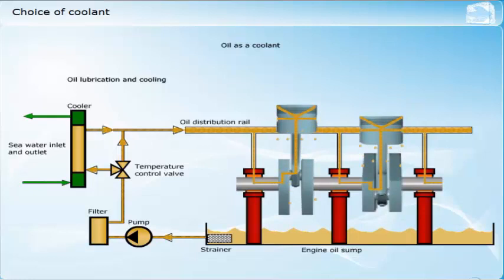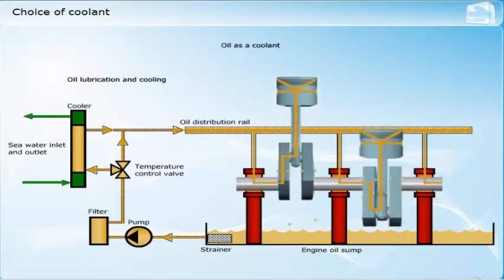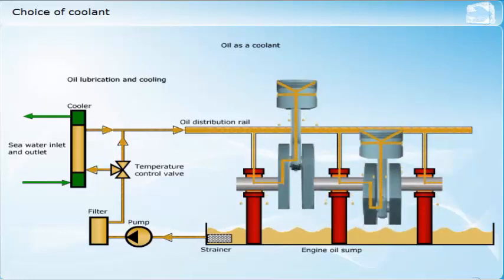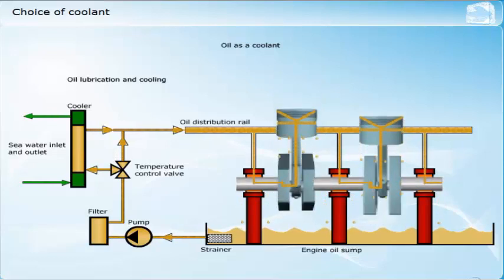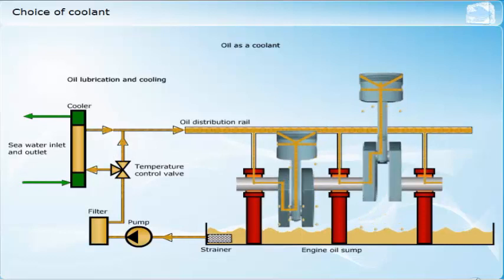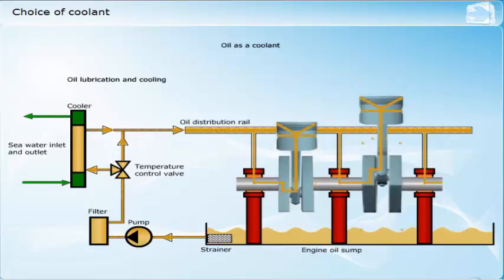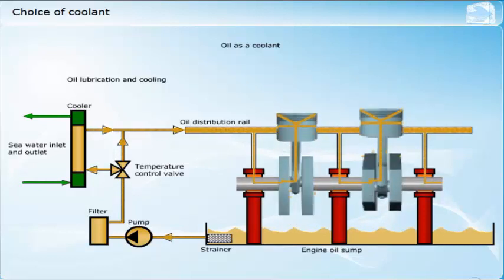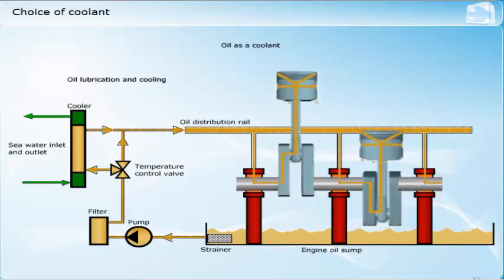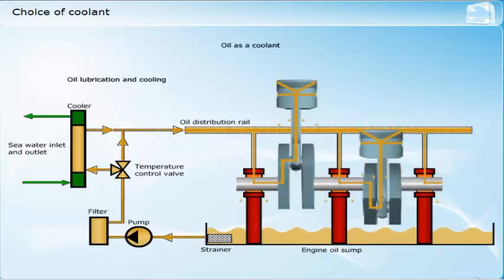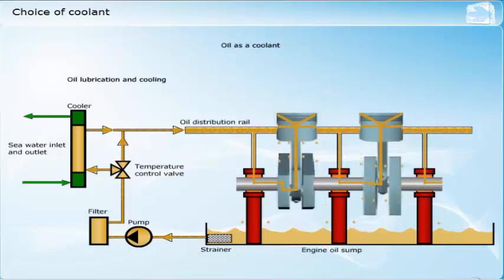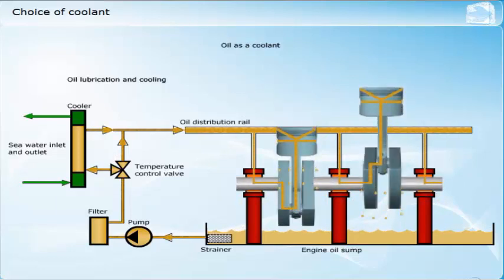The moderate specific heat capacity of mineral oil, 2.0 to 2.5 kJ per kg Kelvin, means that using oil as a coolant is generally restricted to those applications where lubrication is also required. If coolant leakage would be a problem — for example, water in the engine crankcase — then cooling with oil may be the preferred choice, rather than using complex sealing arrangements.